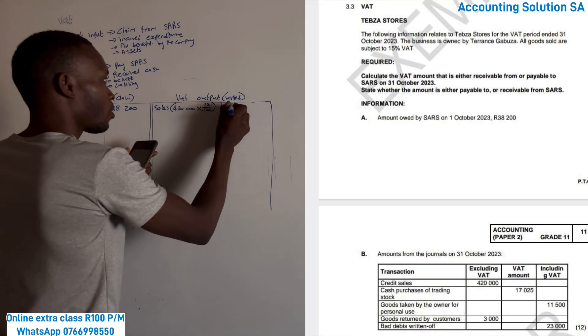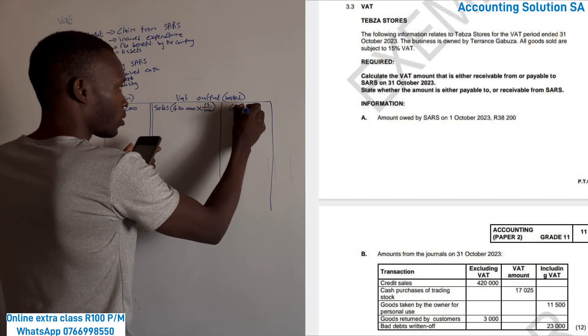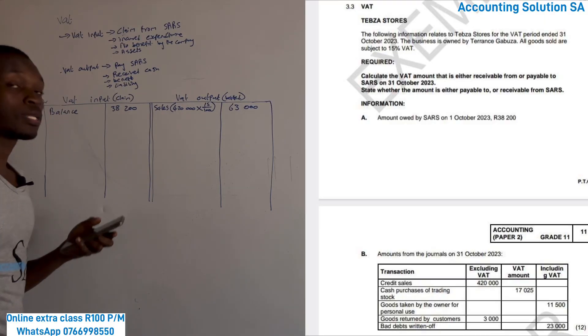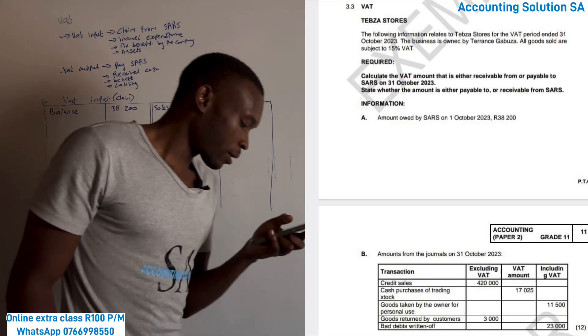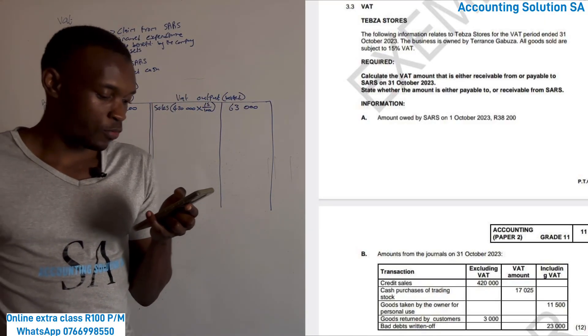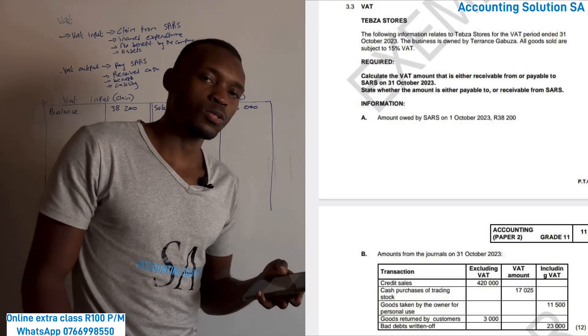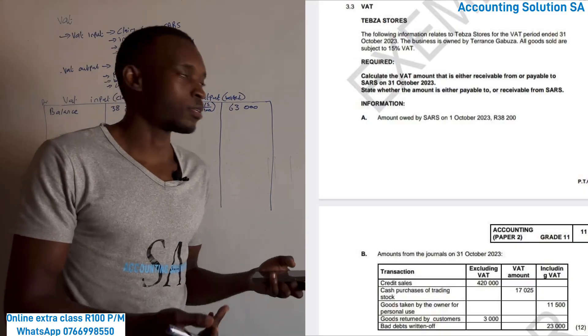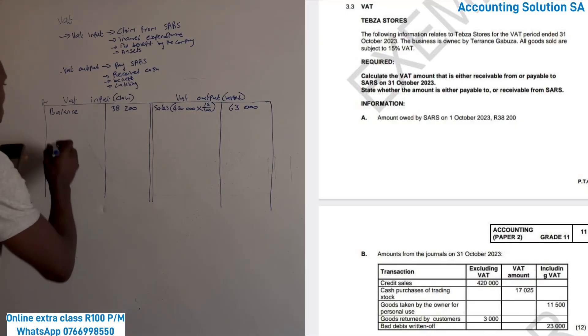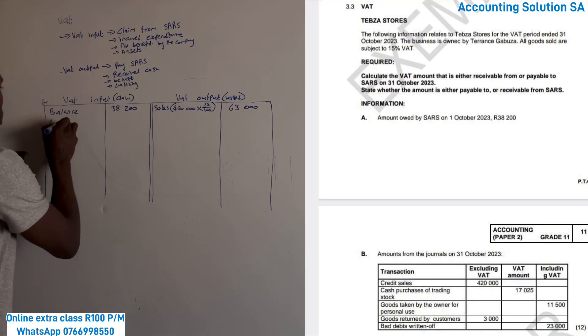Number two: cash purchase of trading stock. We purchase this trading stock. Did we receive cash or benefit? No, which means it's an input. Purchase. In this case no calculation because they give us VAT amount of 17,025.